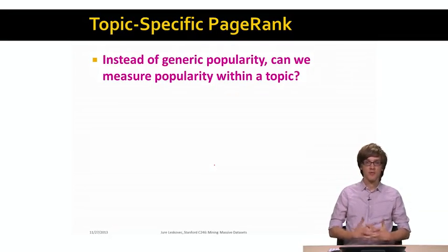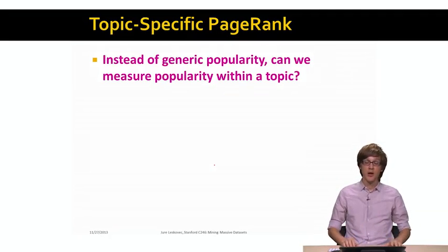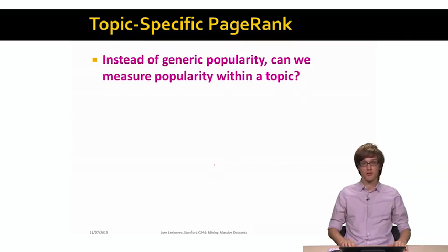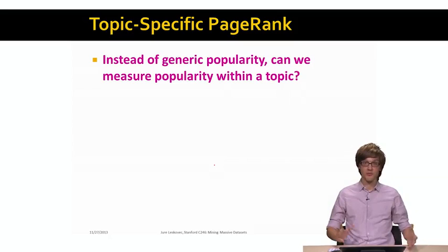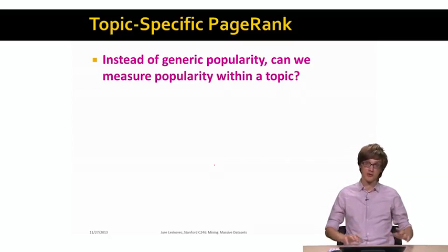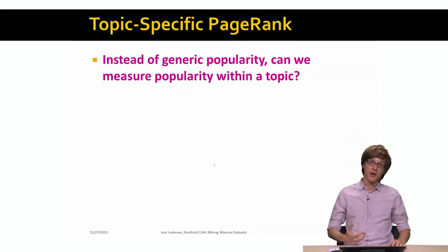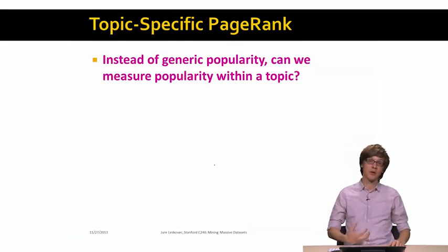Let's think of our initial goal. Our initial goal was to identify important pages on the web graph. Now, we don't necessarily want to find pages that are generic in popularity or that have generically high PageRank score, but we would want to say what are the web pages that are popular within a given topic or within a given domain.